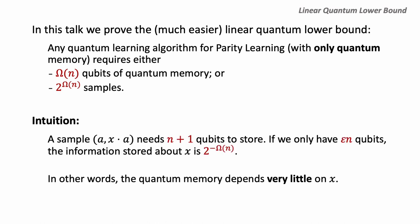The intuition is as follows. A sample (a, x·a) already needs n+1 qubits to store. If you have much smaller space — say epsilon·n where epsilon is less than 1 — then you cannot even store this sample, and the information you can store about x is actually exponentially small. In other words, we are going to prove that whatever happens, your quantum memory will depend very little on the secret x.